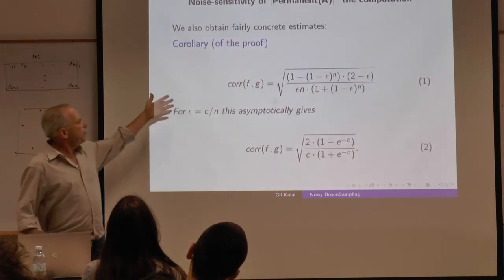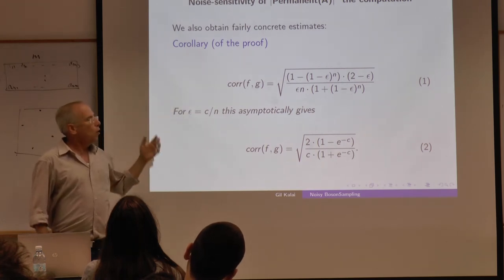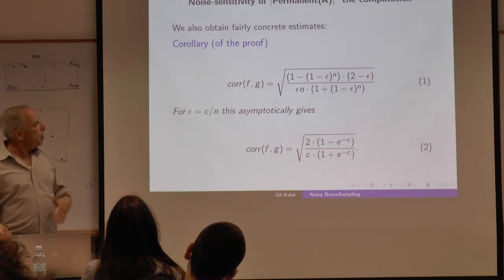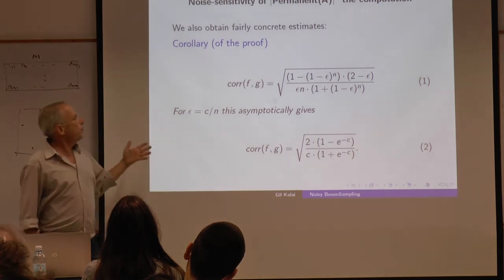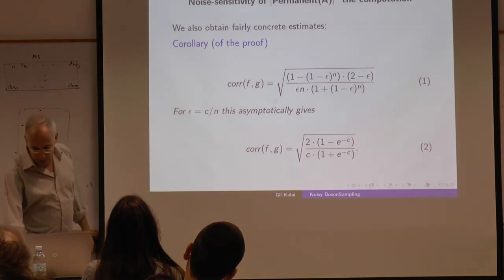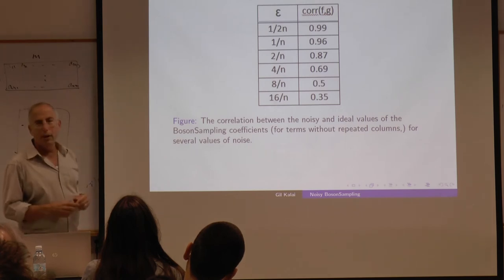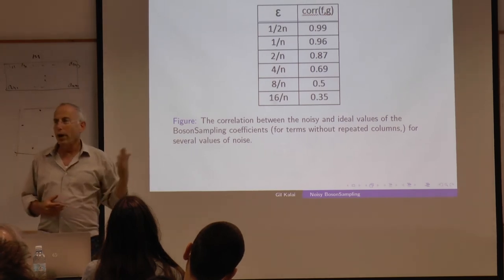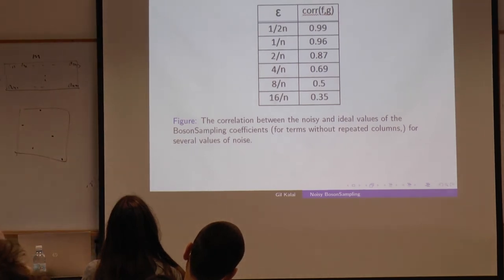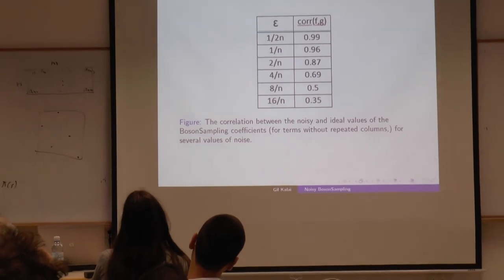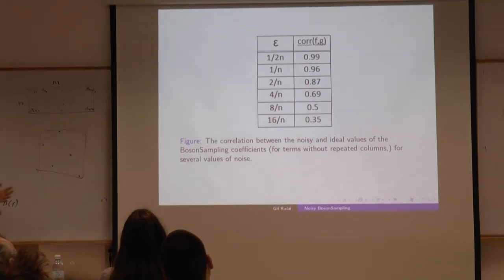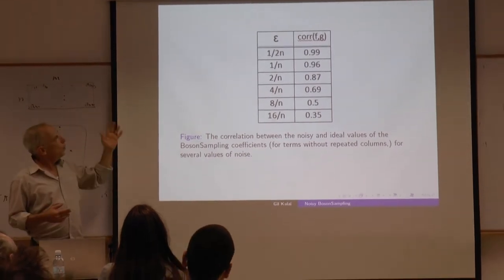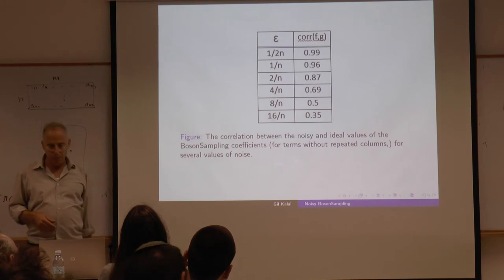This allows not only to prove this theorem but to give a fairly precise computation. We have a precise formula for the correlation of the noisy function and the original function — here is how it looks asymptotically when the level of noise is c/n. We even drew a table giving the correlation when the noise level is 1/(2n), 1/n, 2/n, and so on.